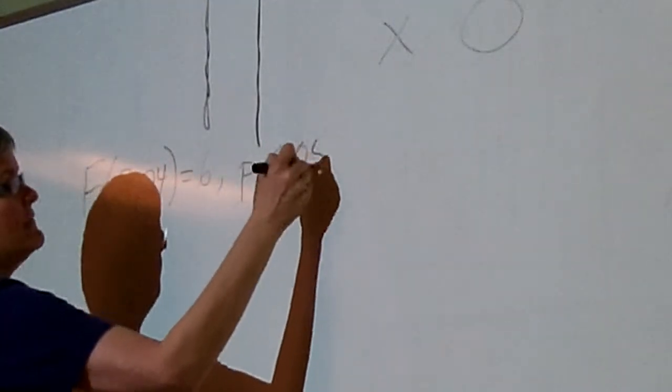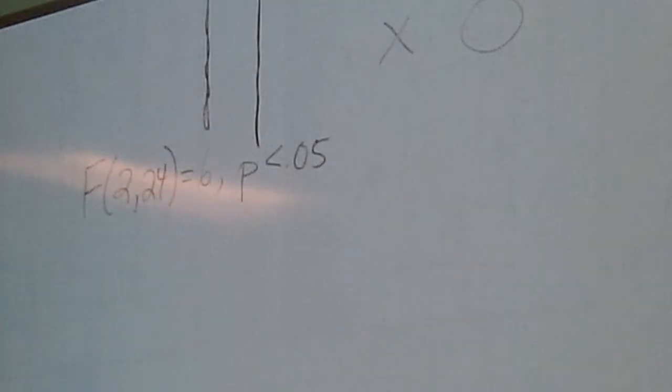Then, p is less than .05, because it was statistically significant. They didn't give you another alpha level, so you assume alpha is .05.